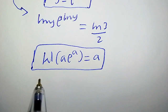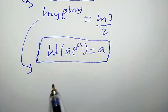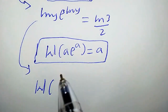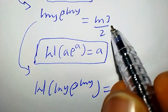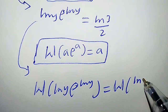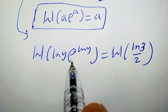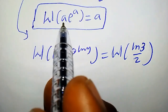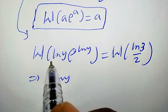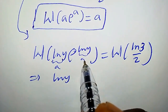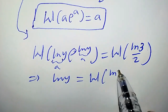Taking the Lambert W function of both sides, we're going to have W of ln(y) times e^(ln y) equals W of ln(3)/2. Comparing the left-hand side with the Lambert W formula — where ln(y) is a — the left-hand side becomes simply ln(y). So we have ln(y) equals W(ln(3)/2).